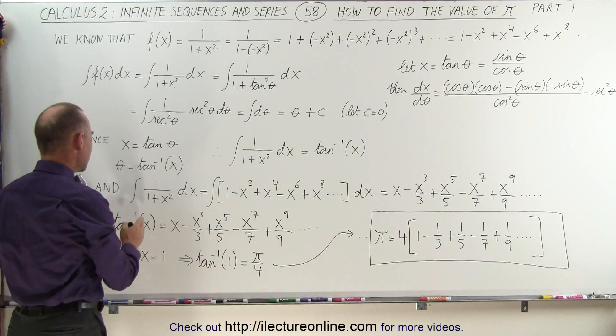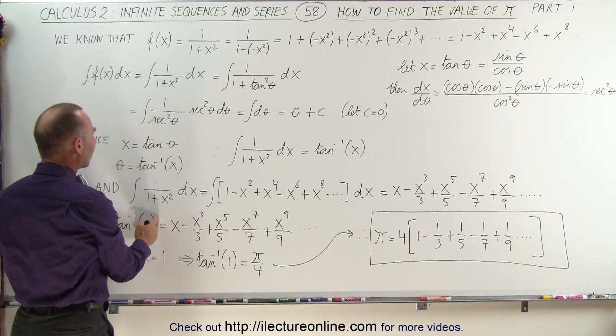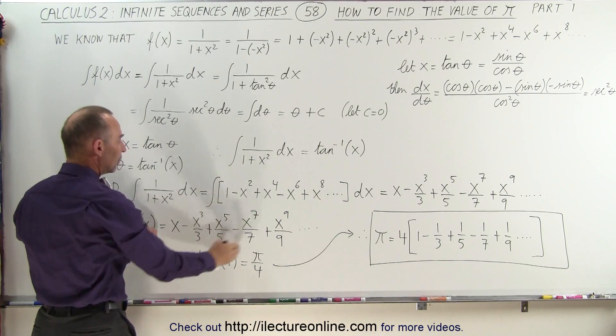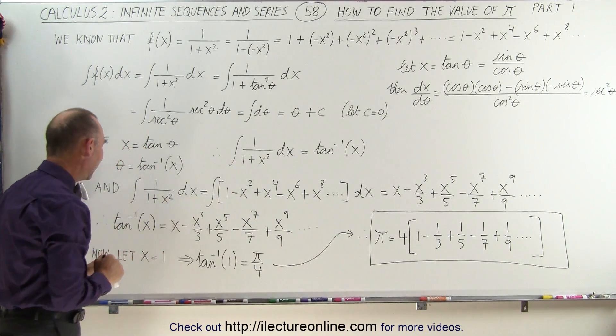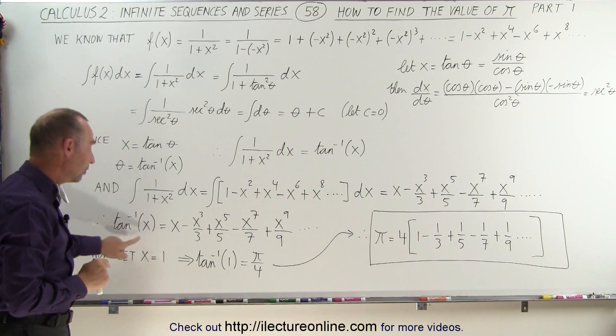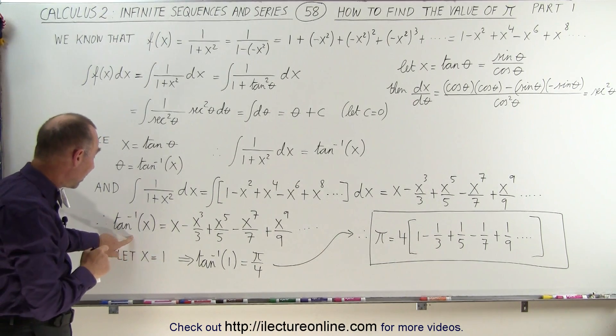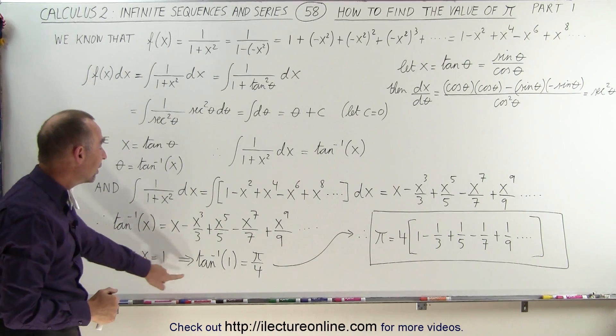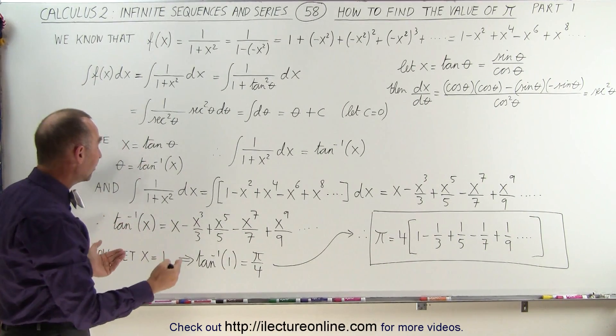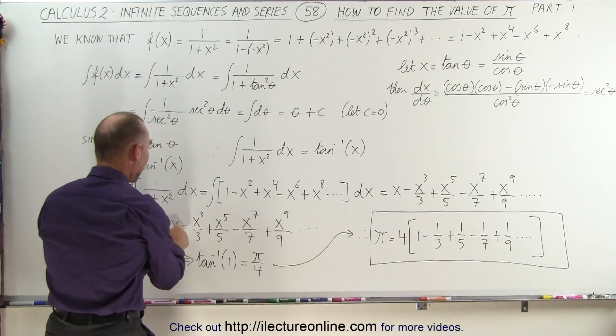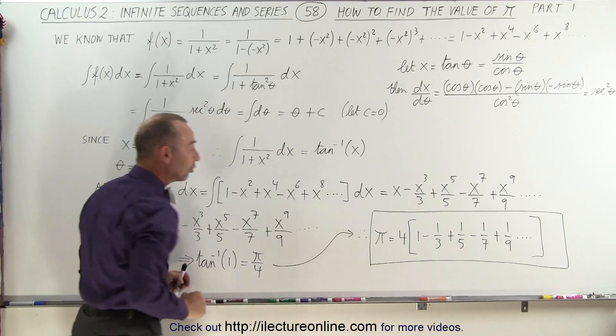We're going to set the inverse tangent of x, which is the integral of this function, equal to the integral of the series. Then when we let x go to 1, the arctangent of 1 is 45 degrees or pi over 4, which means that pi over 4 is equal to this series letting x equal 1 in every one of these terms.